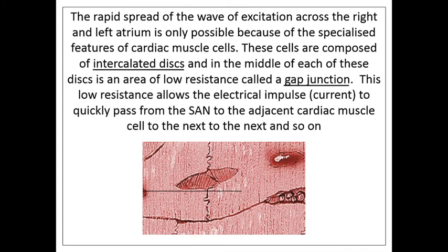A little Year 13 extra: cardiac muscle cells are composed of intercalated discs, and in the middle of each disc is an area of low resistance called a gap junction. Because it's low resistance, the electrical impulse can quickly pass from the SAN to each adjacent cardiac muscle cell, to the next, and so on. Skeletal and smooth muscle don't have this, which is why they can't generate their own electrical impulse — they have to be told to by the nerves.